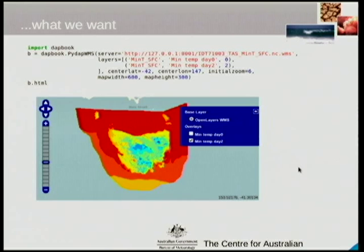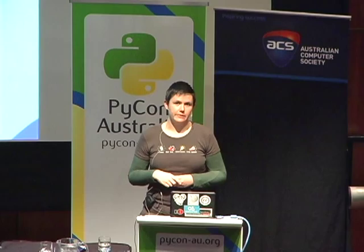The data I'm using in this example is from a service that the Bureau provides called the Australian Digital Forecast Database. You can download sample grids for different weather parameters like minimum temperature, maximum temperature, sea level pressure, wind speeds, and percentage of precipitation. These grids feed into the Bureau's new web app called MedEye, which is only just recently released — do have a look, it's quite cool.